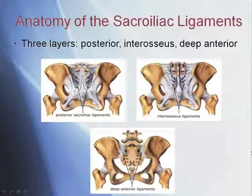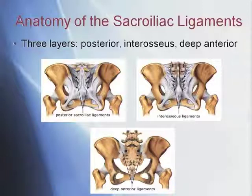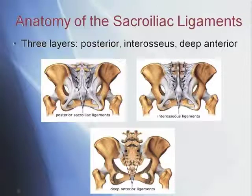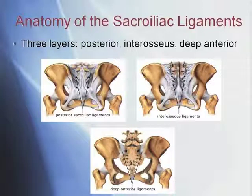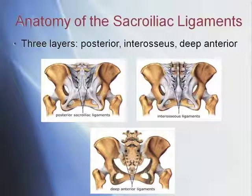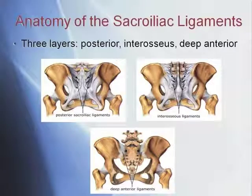The posterior fibers are the only ones our fingers can reach, and actually where most injuries occur. The posterior sacroiliac ligaments are located in the deep depression between the sacrum and the ilium — right here by the PSIS. They're very, very strong and form the chief connection between the sacrum and the iliac bones. They consist of numerous fasciculi, or bundles of fibers, which pass between the two bones in various directions.